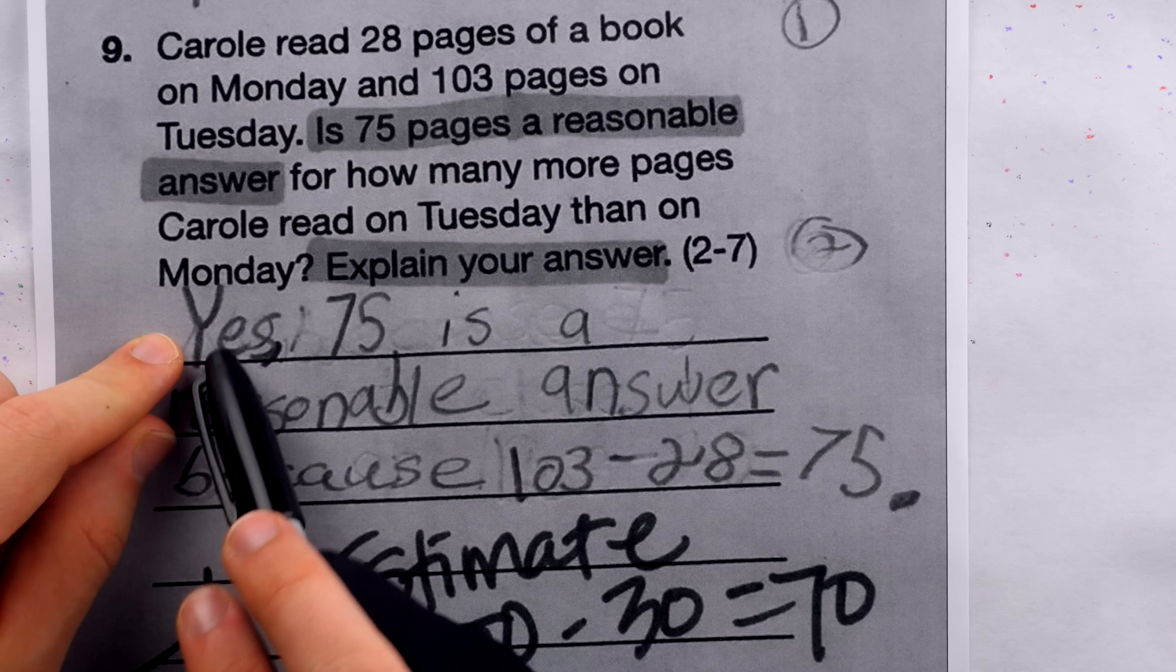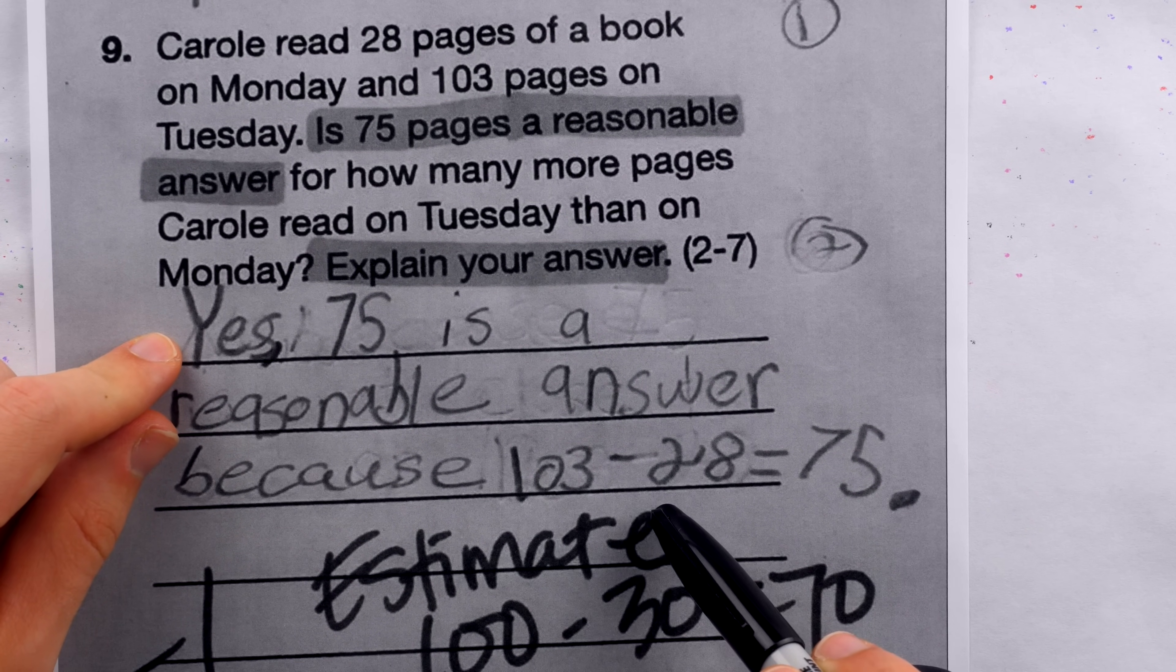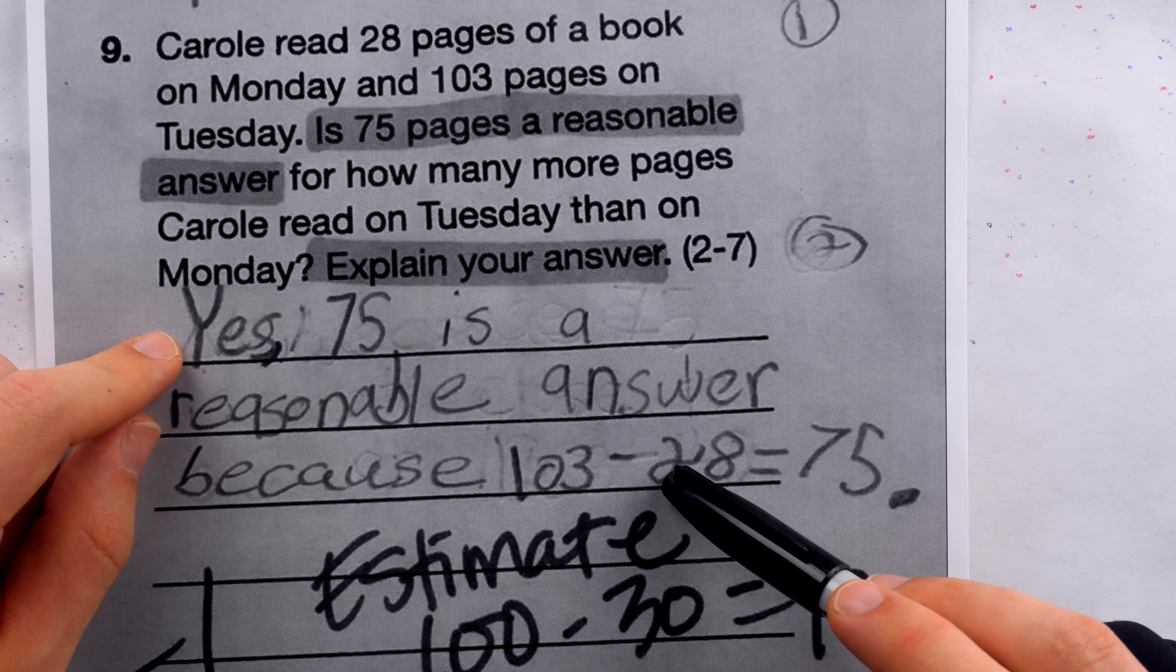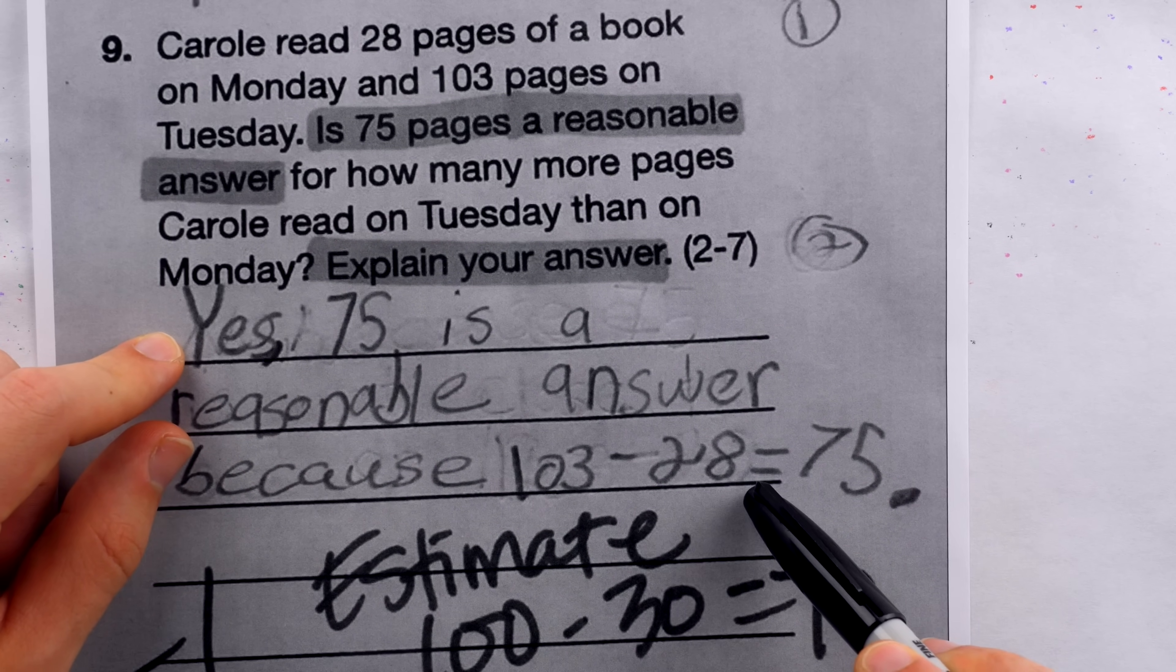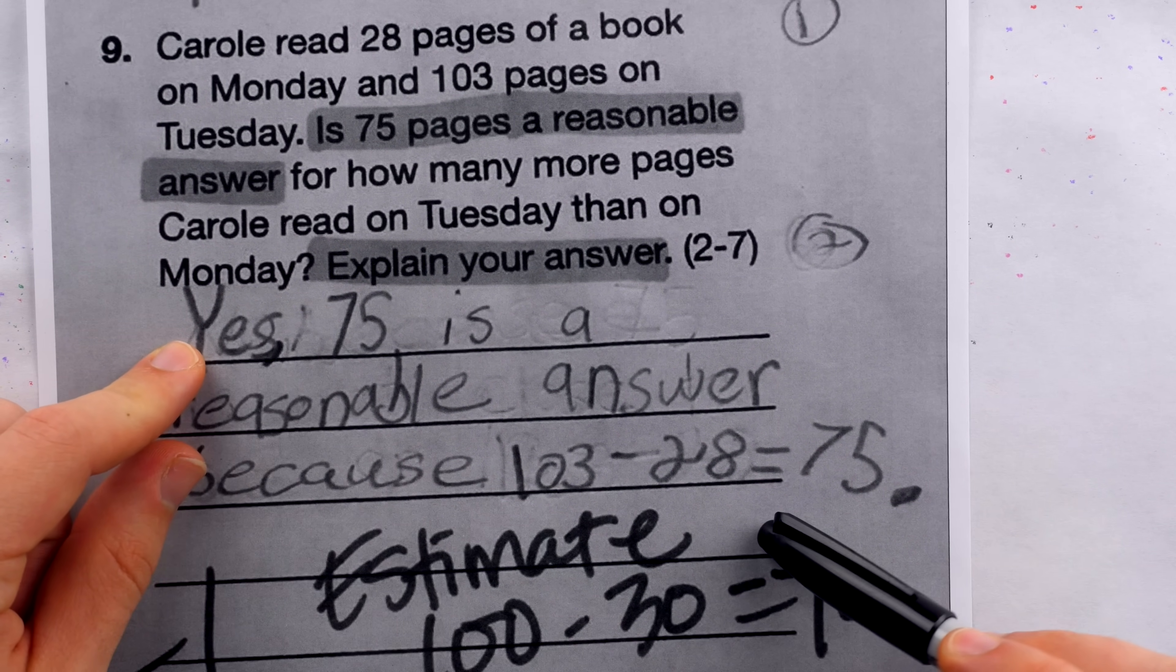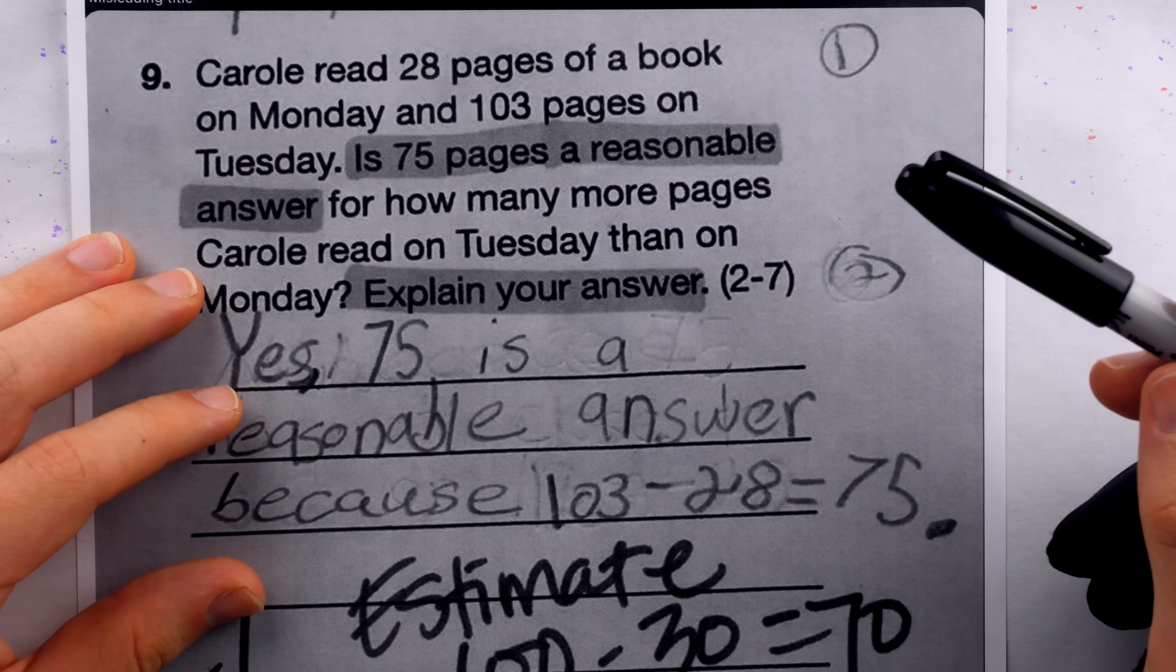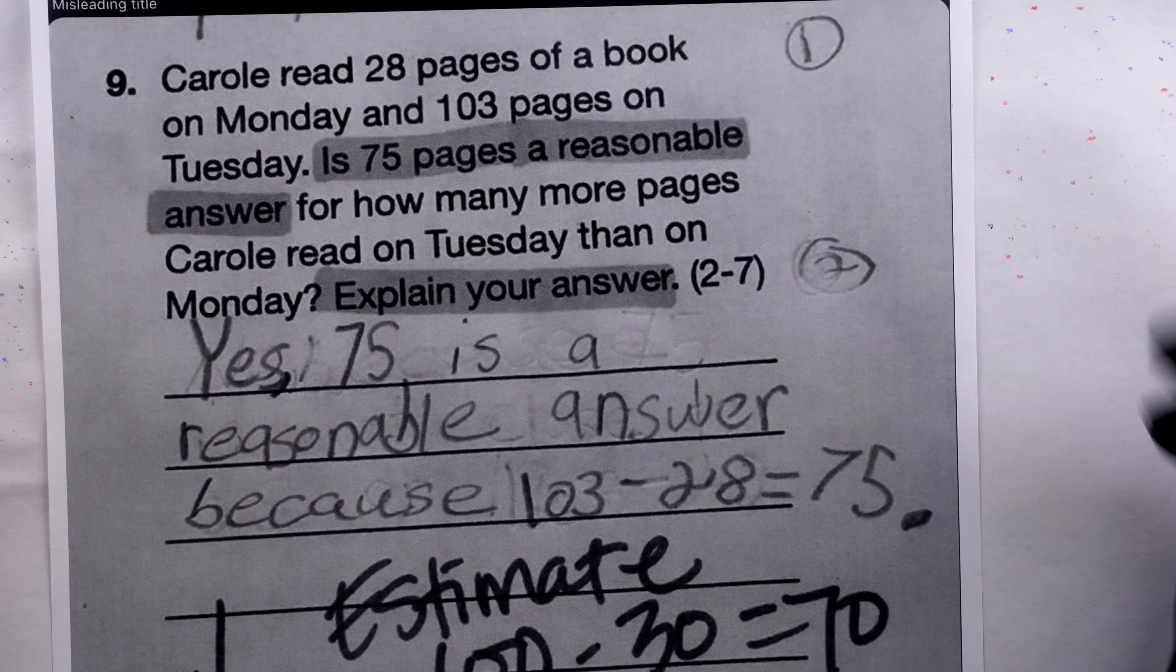So for example, if they said, no, 75 is not a reasonable answer because 103 minus 28 equals 75, I would give one out of two because it's true that 103 minus 28 is 75. That is a relevant calculation, but you should then say yes, this is a reasonable answer because of that. So I would be looking for soundness and congruity between the answer and the explanation. If a student said, yes, 75 is a reasonable answer because it's divisible by five, I would give one out of two because yes is correct, but the reasoning is certainly not correct. It has nothing to do with the problem.